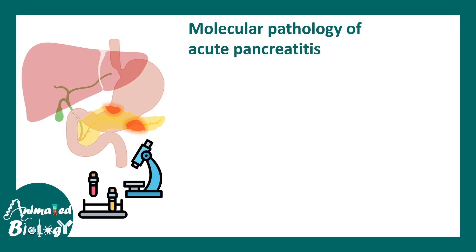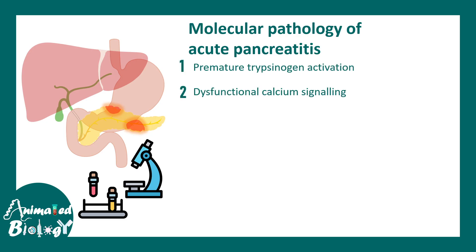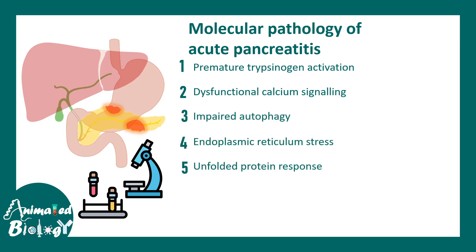The overview of molecular pathology in acute pancreatitis includes premature trypsinogen activation, dysfunctional calcium signaling, impaired autophagy, endoplasmic reticulum stress, unfolded protein response, and mitochondrial dysfunction. All of these factors in combination constitute the molecular pathology of acute pancreatitis, though all may not be present in every patient.